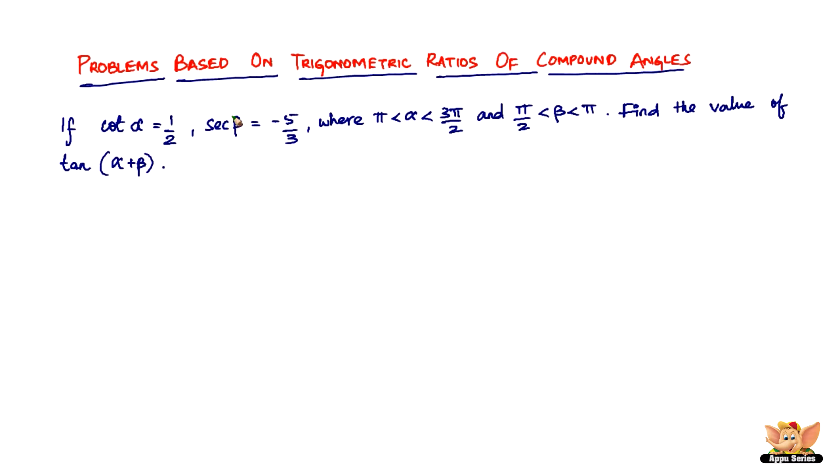Beta and all those things, they're just another angle like theta. You can't use theta for everything. When they say alpha and beta, it means different angles. So when cot α equals 1/2 and sec β equals -5/3, where α